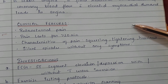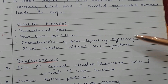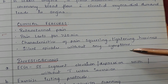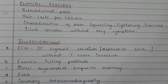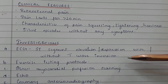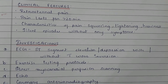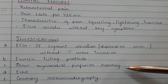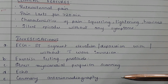Clinical features of angina include retrosternal pain lasting 20 minutes or more. Characteristics of the pain include squeezing, tightening, heaviness, and silent episodes without any symptoms. Investigations include ECG showing ST segment elevation or depression with or without T wave inversion, exercise testing protocols, stress myocardial perfusion scanning, echocardiography, and coronary arteriography.